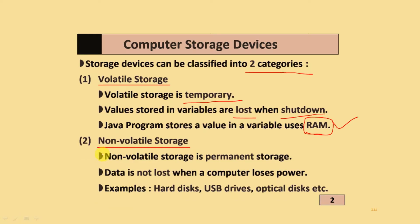Non-Volatile Storage is Permanent Storage — data is not lost when the computer loses its power. Examples include Hard Disk, USB Drive, Optical Disk, and others.